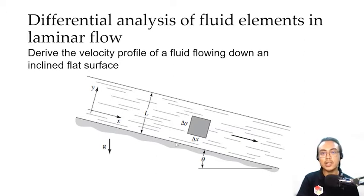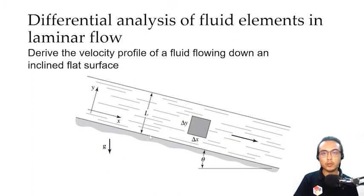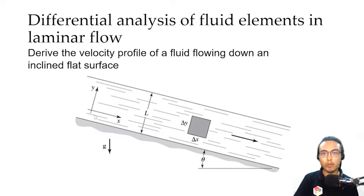One key difference between those two examples concerns our coordinate system. In this case, the coordinate system is also tilted by the same angle as our inclined plane. The x and y-axis are tilted at an angle of theta. This allows our coordinate system to be in line with the movement of the fluid, because the movement of the fluid from left to right is not entirely horizontal — it is at an angle of theta. Making our x-axis at the same angle as the fluid simplifies our solution.